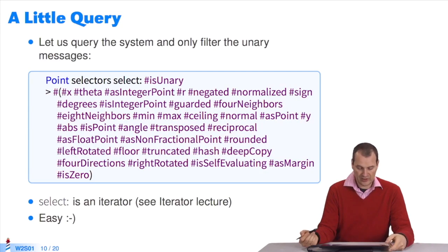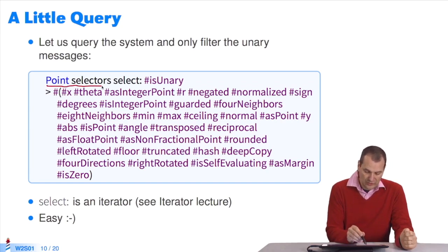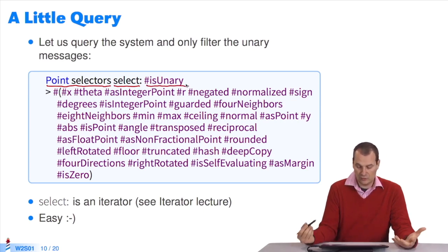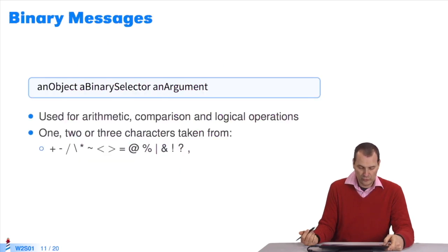Let's refine this. I'd like to query this system for all the unary selectors of the class Point. Class Point, list all your selectors. It'll return an array, a collection. I write that I want to select among the selectors those which are unary. There's a query called is unary. This is a small footnote in the syntax. You'll learn about it in the course about iterators, select being one. It's very elegant. I can query the system in one line.